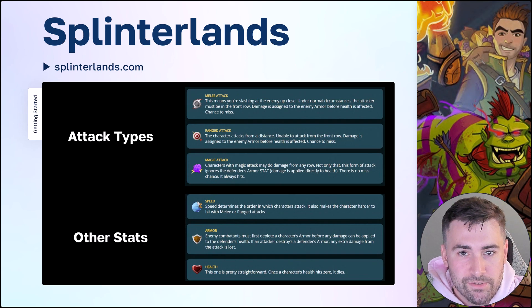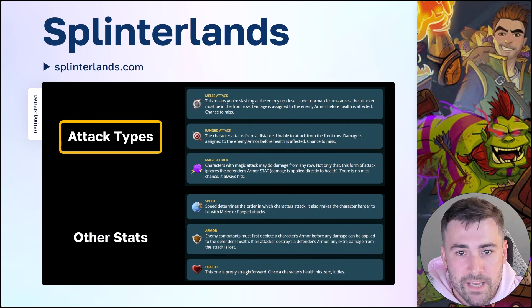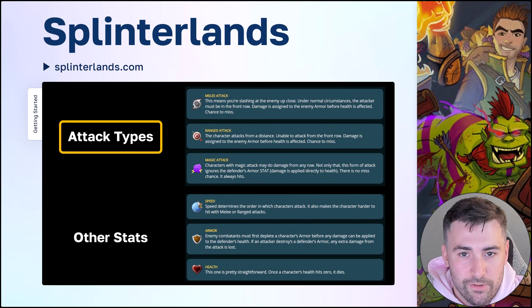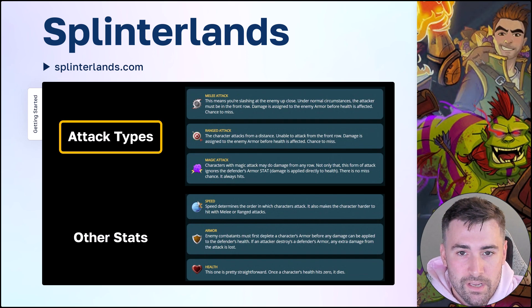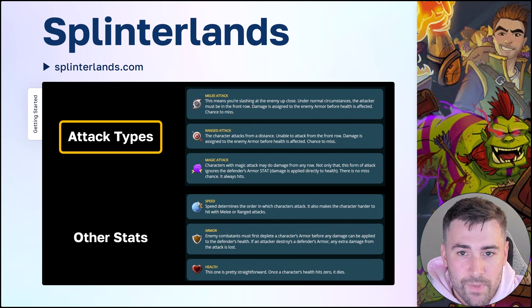There are three different attack types that you'll see on the monster cards. One is melee attack, which means they can only attack from the first position. Ranged attack means they cannot attack from the first position, but they can attack from any other position in the lineup. And magic attacks can attack from all positions and also completely ignore armor. Typically, players will have melee monsters in the front, magic monsters following them, and ranged monsters at the back of the line, because they can't attack once they move into the first position, so you want to keep them as far back as possible.